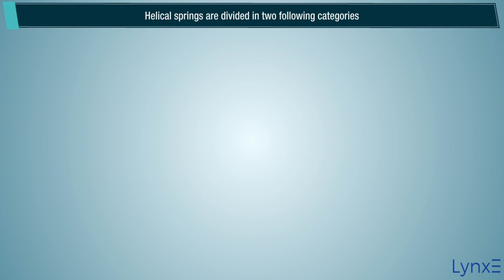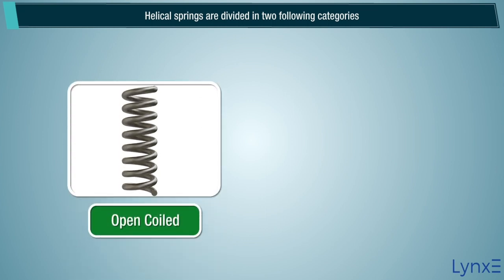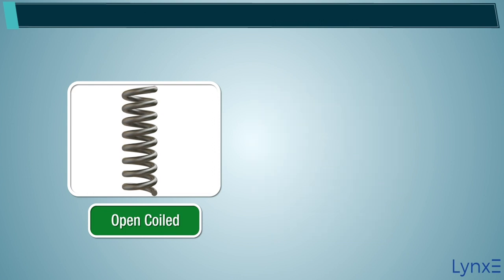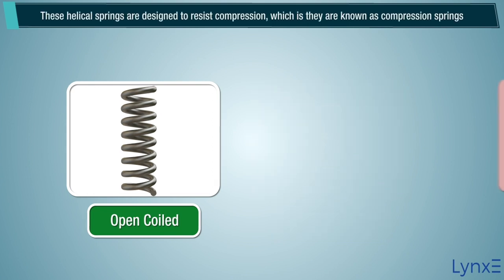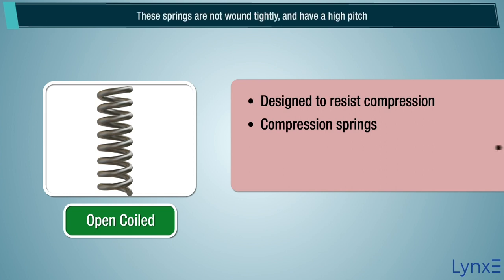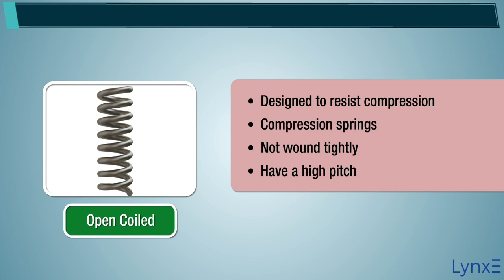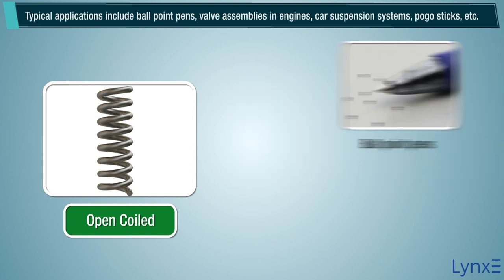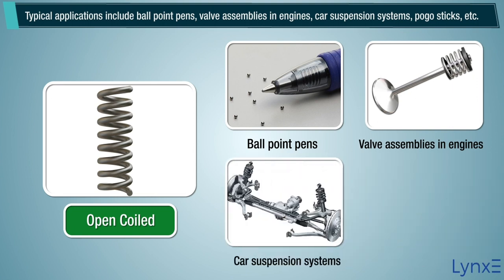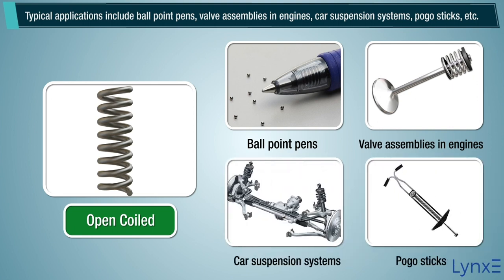Helical springs are divided into two categories: open coiled and closed coiled. Open coiled helical springs are designed to resist compression, which is why they are known as compression springs. These springs are not wound tightly and have a high pitch. Typical applications include ball point pens, valve assemblies in engines, car suspension systems, pogo sticks, etc.